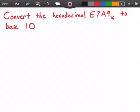Hey guys, in this video we're going to convert the hexadecimal number E7A9, which is base 16, to base 10. Let's get started. First thing I'm going to do is rewrite our number.